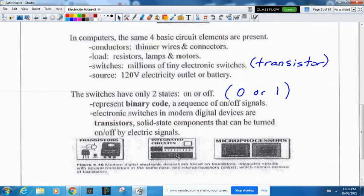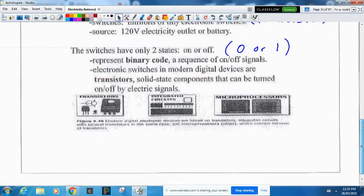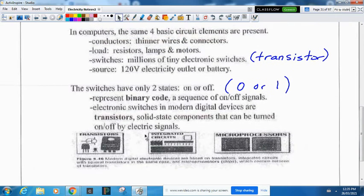There's also integrated circuits and microprocessors. You should know that in electronic devices, the voltage tends to be smaller, the current tends to be smaller, the wires are thinner, and the resistors are relatively small compared to an oven.